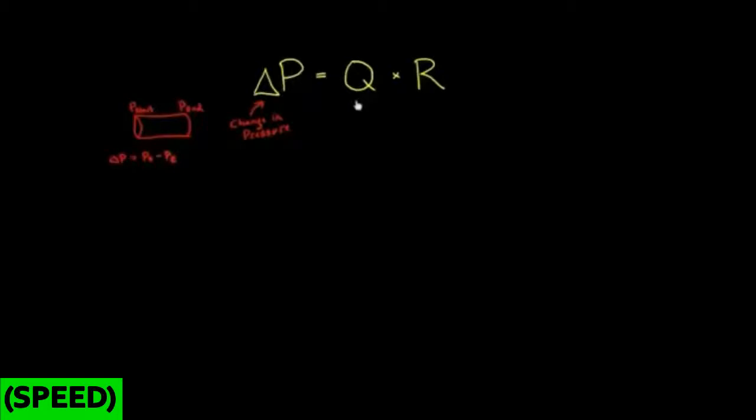So next we've got Q. So what is Q? This is flow, and more specifically, it's blood flow. And this can be thought of in terms of a volume of blood over time. So let's say minutes. So how much volume, how many liters of blood are flowing in a minute or two minutes or whatever number of minutes you decide?